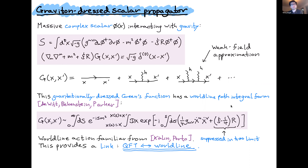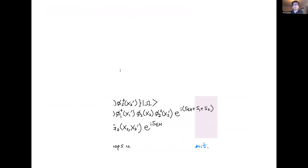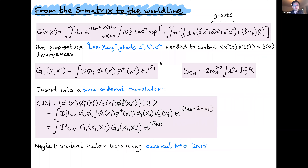Hopefully what you can already see is the utility of this, because now we have a link between QFT on the scalar side — which we can use to talk about amplitudes — and worldline on the other side, and this is going to be our basic building block. Now I have to confess that the propagator I showed you on the last slide is actually not quite complete. The full propagator, which Bekenstein and Parker wrote down, also contains these non-propagating Lie-Yang ghosts — A is a commuting field and B and C are anti-commuting.